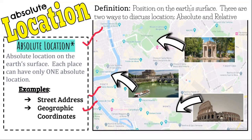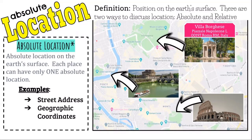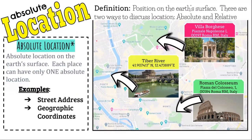If I'm hiking and I have a place I want to go to, I'll type it into my phone or GPS — it gets the coordinates, talks to satellites, and gets me to that exact location. For example, Villa Borghese is at Piazzale Napoli 1, 00197 Roma, Italy. The Tiber River can be found at 41.907417°N, 12.473889°E. The Roman Colosseum is at Piazza del Colosseo 1, 00184 Roma, Italy. Those are examples of absolute location.